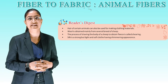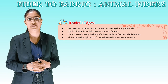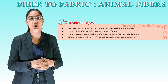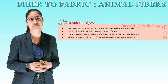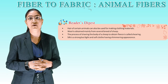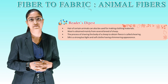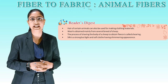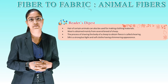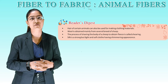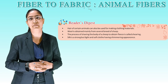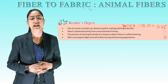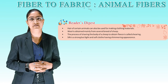Let's quickly revise: hair of certain animals can also be used for making clothing materials. Wool is obtained mainly from several breeds of sheep. The process of shaving the body of a sheep to obtain fleece is called shearing. Silk is a strong but light and soft cloth having a shimmering appearance. We have completed our chapter — thank you, class.